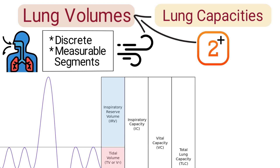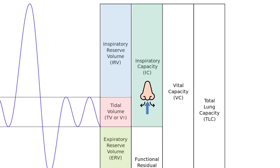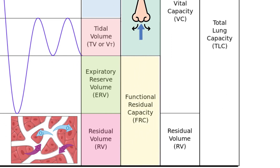The primary lung capacities include inspiratory capacity, which is the total volume of air that can be inhaled after a normal exhalation. Inspiratory capacity can be calculated by adding the tidal volume to the inspiratory reserve volume. Functional residual capacity is the volume of air exhaled after a normal tidal volume breath, in addition to the volume remaining in the lungs after maximum exhalation, and it can be calculated by adding the expiratory reserve volume to the residual volume.